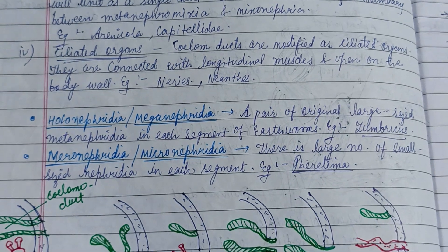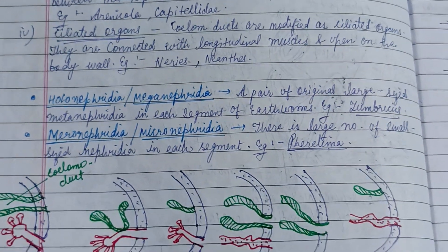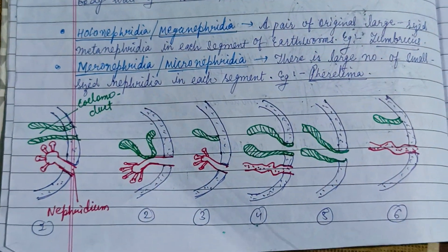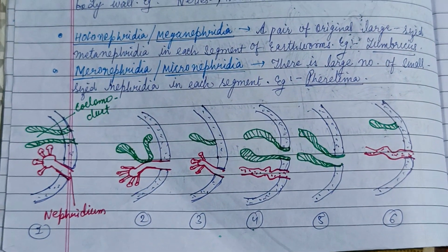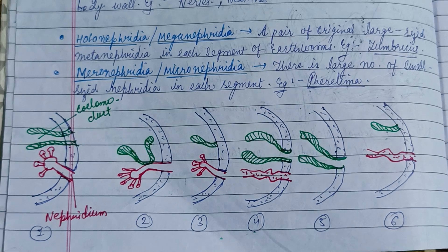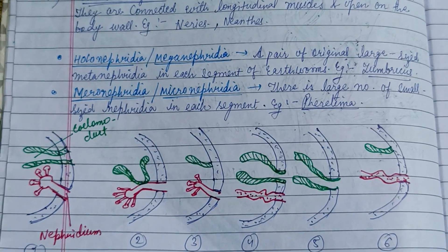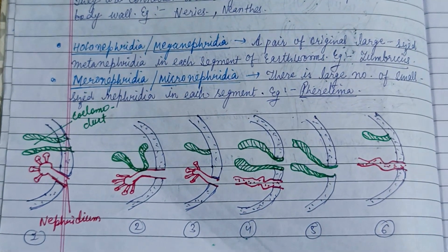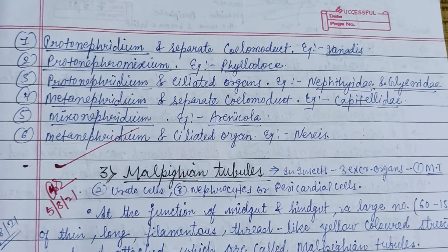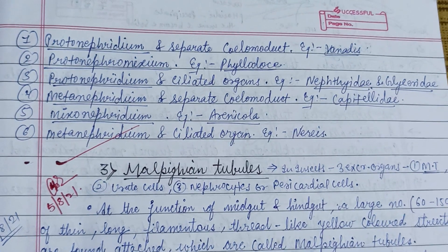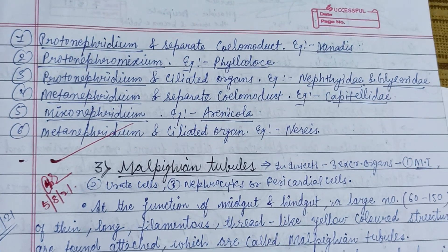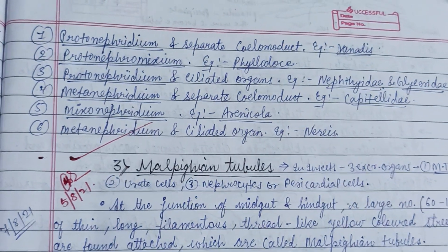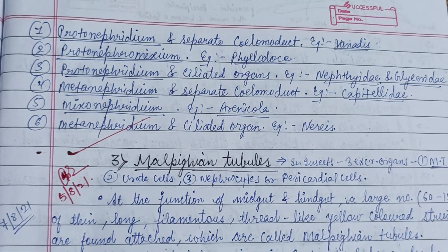Ciliated organs are also present, and here is a picture of all the nephridia showing their different types. In the next video, we will see the Malpighian tubules and their figure. Thank you, keep watching.